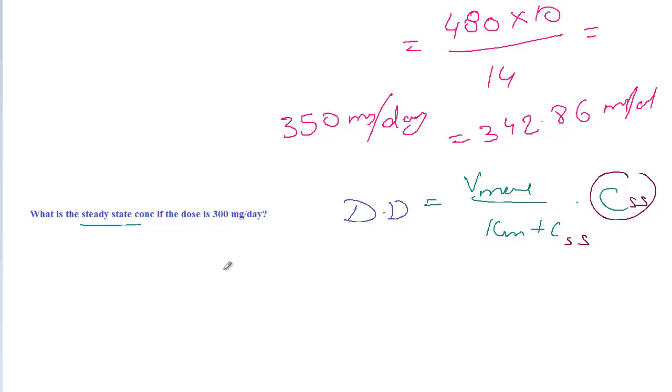If you cross multiply this one, dose times Km plus concentration at steady state equals Vmax times concentration at steady state. So that is D times Km plus D times CSS equals Vmax times CSS.